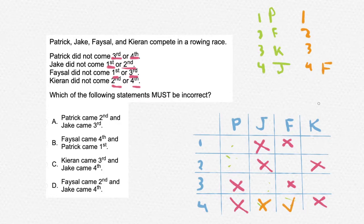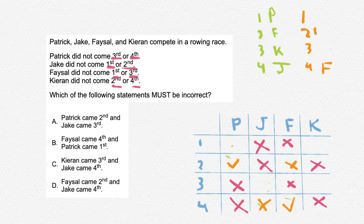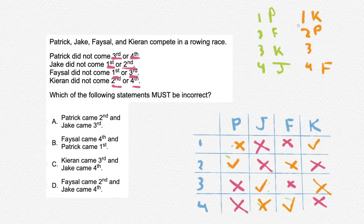Since we assumed Jake came 4th, now let's assume that Faisal came 4th and see the difference between the two arrangements. If Faisal came 4th, that leaves only 1 position for 2nd place, and that position is for Patrick to come 2nd. That means Patrick cannot come 1st, leaving Kirian as coming 1st. That means Jake must have come 3rd. Now we have 2 arrangements of how they could have come in the race.